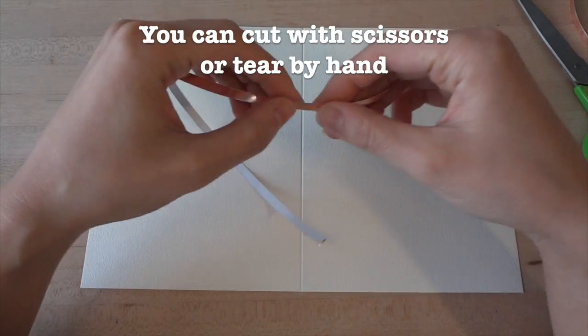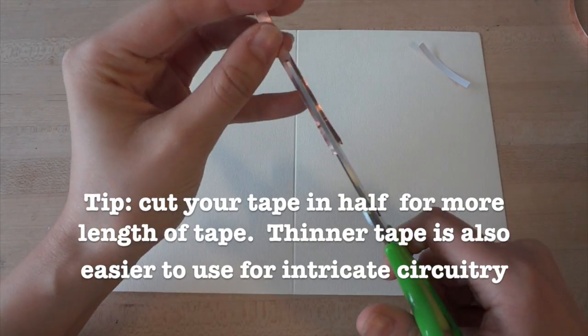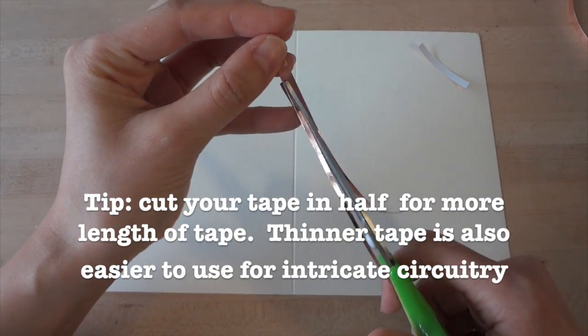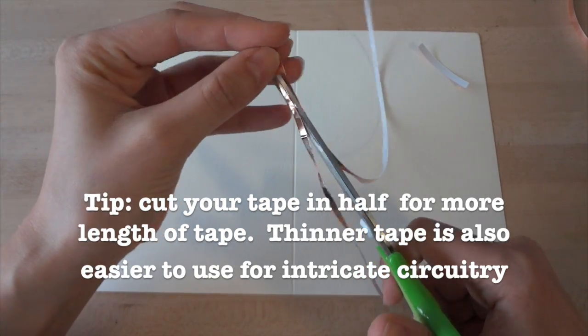You can use scissors to cut it, but it's also soft enough to tear by hand. I like to cut my tape in half lengthwise because this gets me twice the length of copper to use, and also thinner tape is easier to maneuver for finer details.